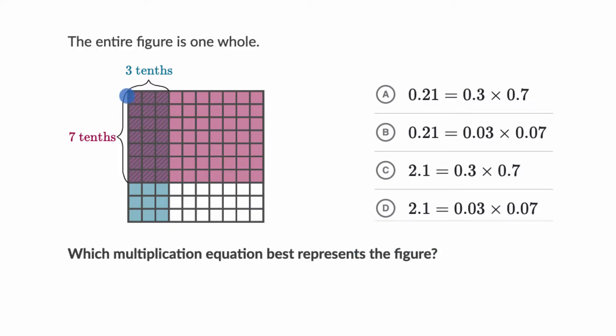So this whole square is a whole. And now let's first think about what's going on with this three-tenths. They've labeled the three-tenths as three of these vertical bars right over here. We could view the three-tenths as these three vertical bars. And then they also have this seven-tenths, which are seven of these horizontal bars. And notice each of those bars are a tenth of the whole.